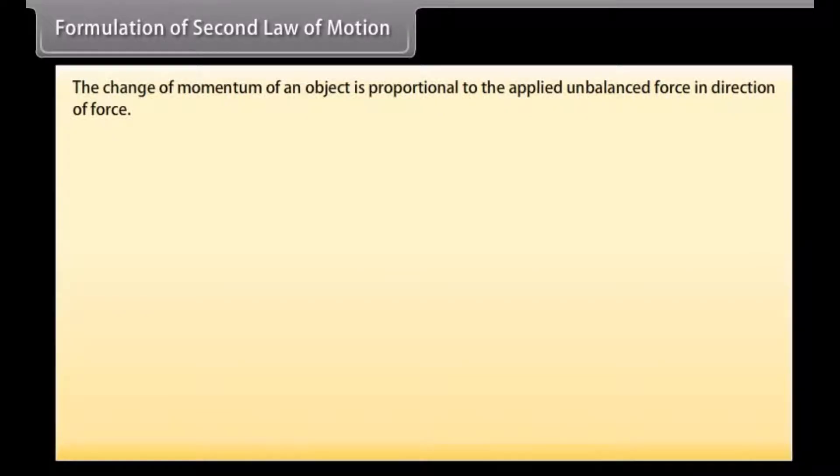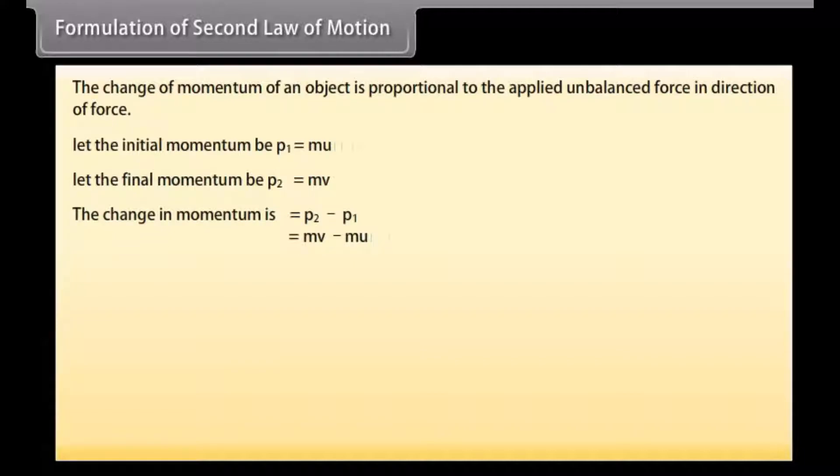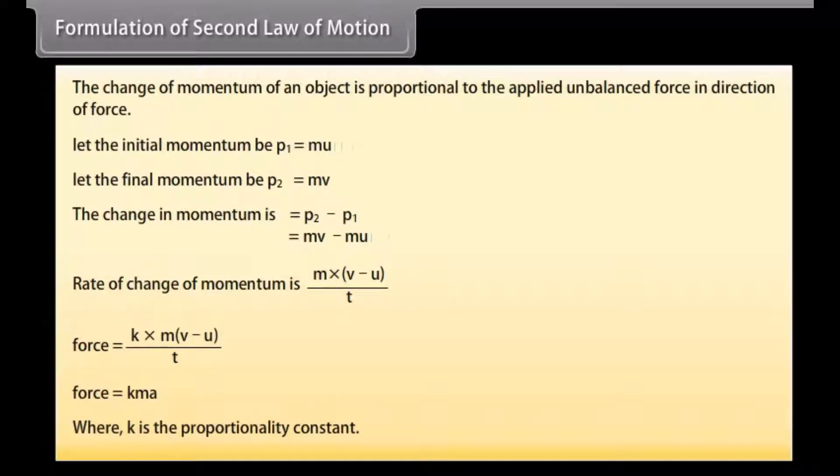The change of momentum of an object is proportional to the applied unbalanced force in direction of force. Let the initial momentum be P1 which is equal to MU. Let the final momentum be P2 which equals MV. The change of momentum is P2 minus P1 which equals MV minus MU. The rate of change of momentum is M into V minus U whole upon T. Force is equal to K into M into V minus U whole upon T. Force is equal to KMA where K is the proportionality constant.